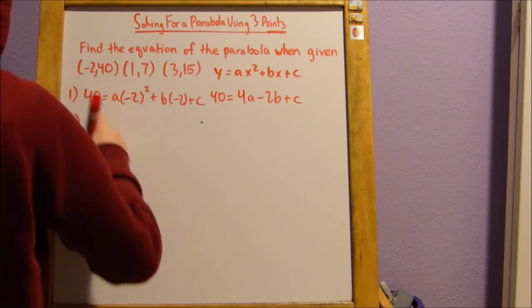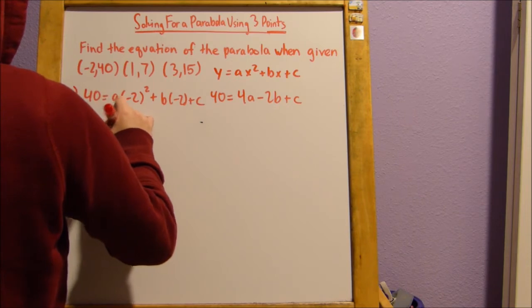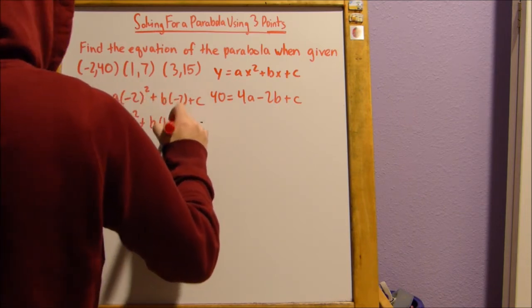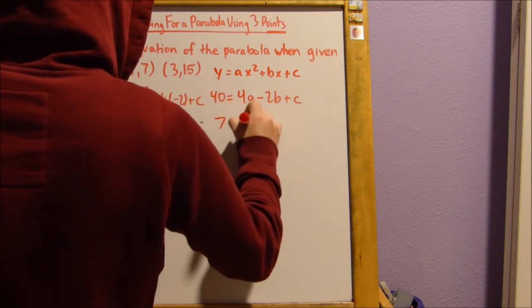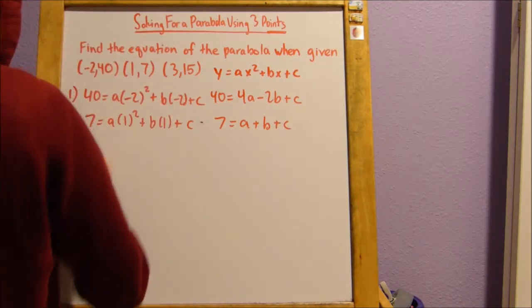Our second one, use this coordinate pair. 7 equals a times 1 squared plus b times 1 plus c. And that's going to be 7 equals a plus b plus c.